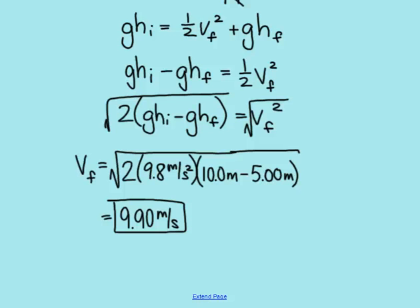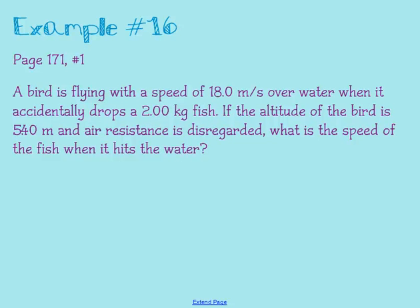Let's try one more problem using conservation of energy. This one talks about a bird flying with a speed of 18 meters per second over water when it accidentally drops a 2 kilogram fish. We know the altitude of the bird and we're ignoring air resistance. We want to find the speed of the fish when it hits the water. This is a problem you could have done back in the chapter about two-dimensional motion, but we'll look at it through conservation of energy, which may actually be a bit easier than using projectile motion. Our system in this case is just the fish. We're looking at that moving object, ignoring the bird. It tells us we're disregarding air resistance and the fish is not touching anything, so there can be no friction. That was step one.